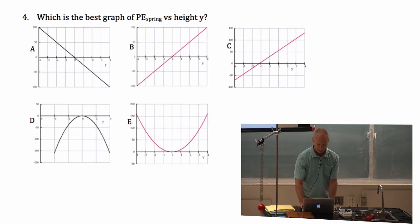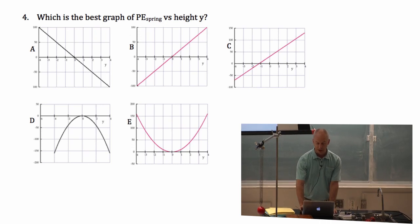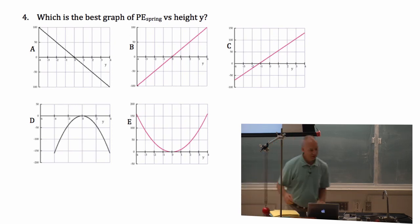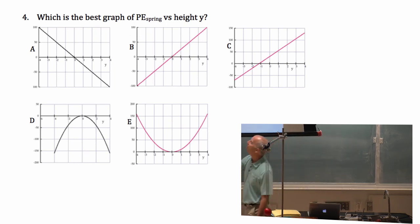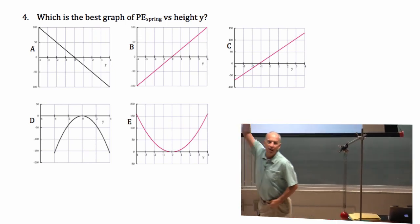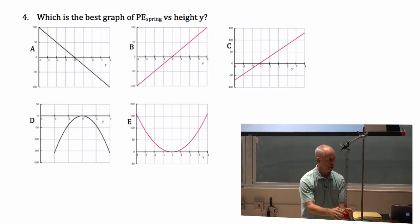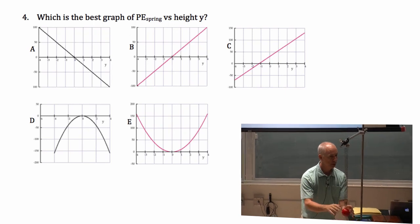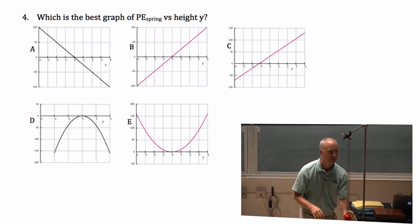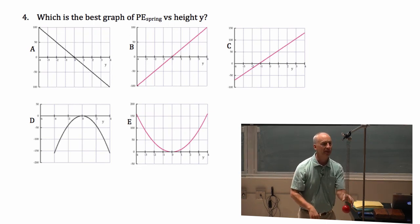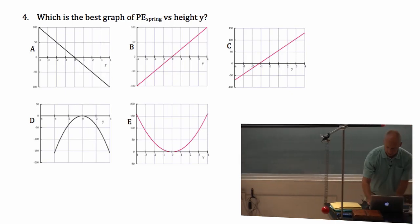The question about which was the best graph of spring potential energy versus height — E was the best one. It turned down and had a minimum potential energy at an equilibrium point, with the potential energy going up if you pulled it down away from equilibrium, and going up if you pushed it up away from equilibrium. Stretching or compressing the spring does the same thing.